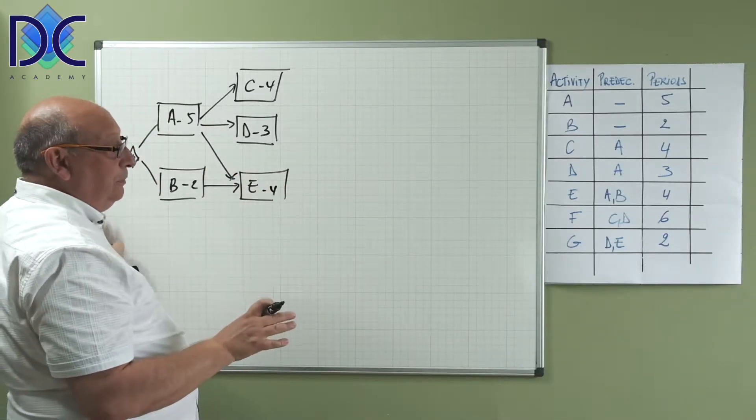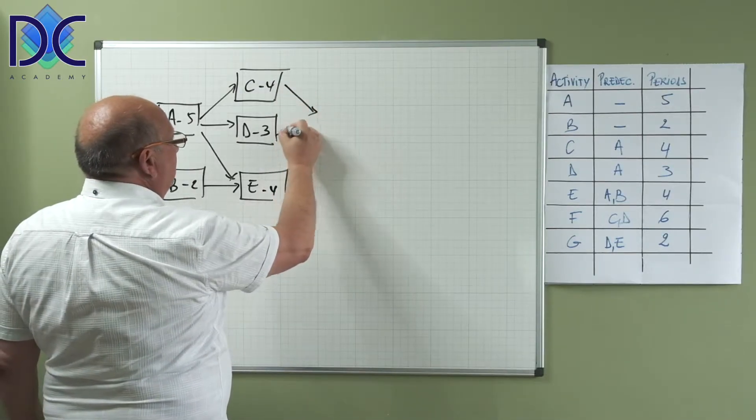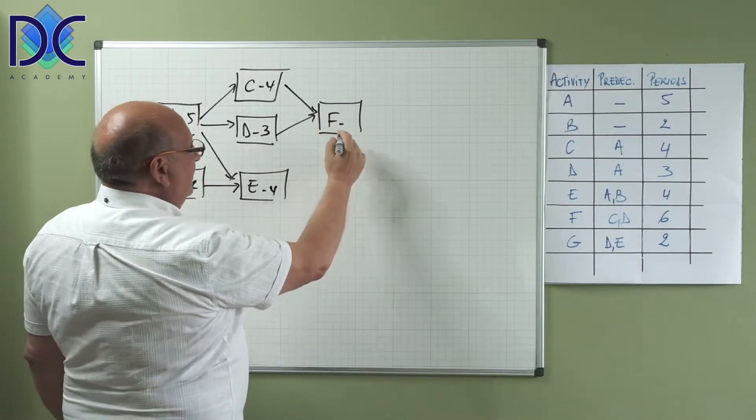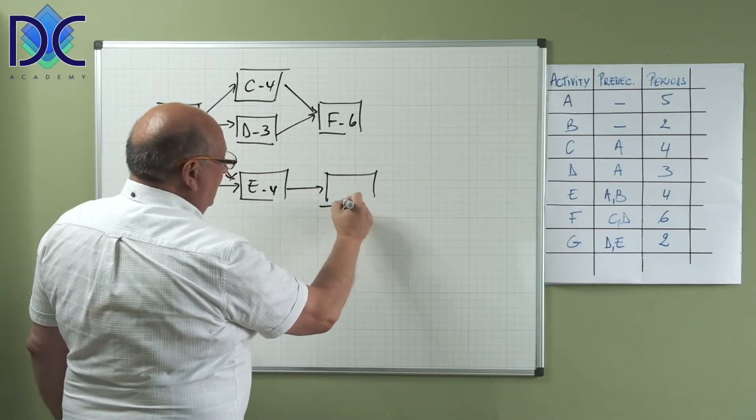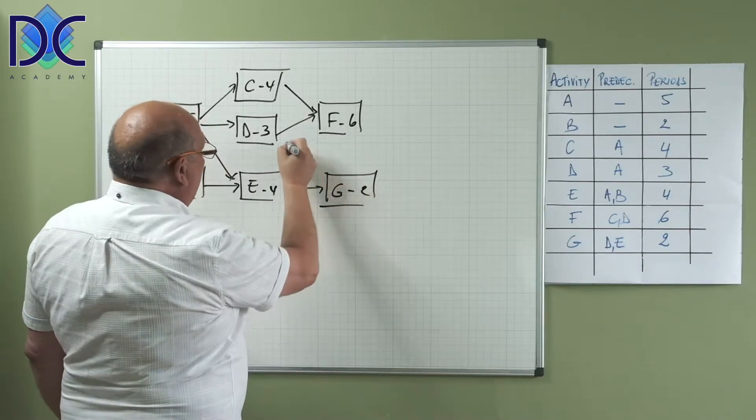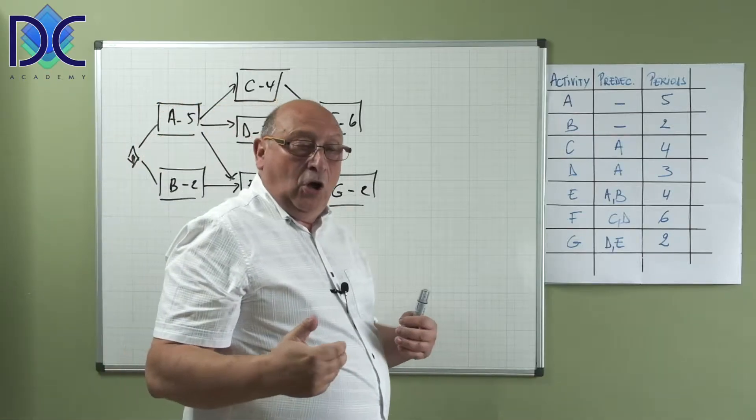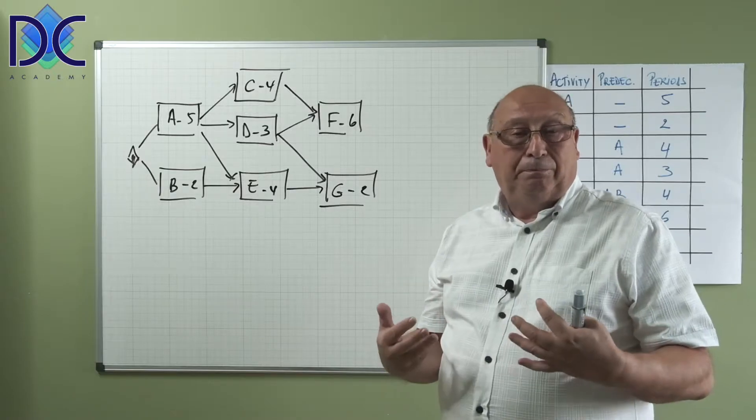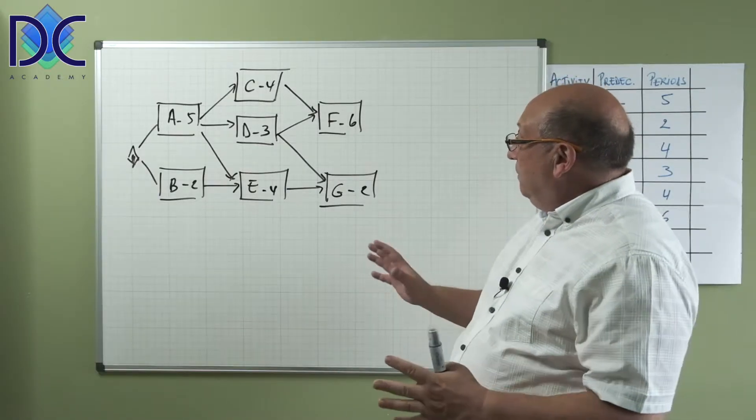F has C and D as predecessors with the duration of 6, and G also has D and E as predecessors. So our schedule is a little bit more complex. We have a few more arrows, a few more precedences than in the previous diagram, but basically the principle stays the same.